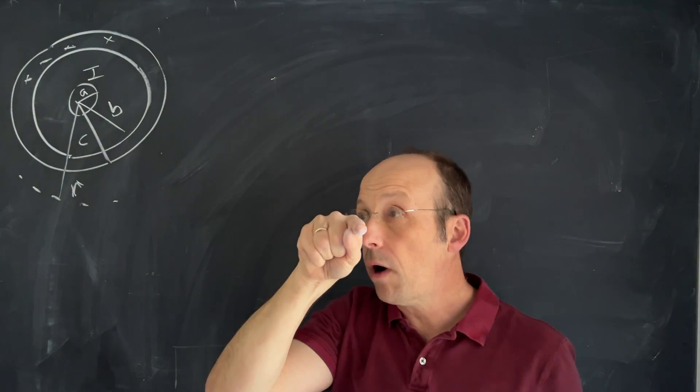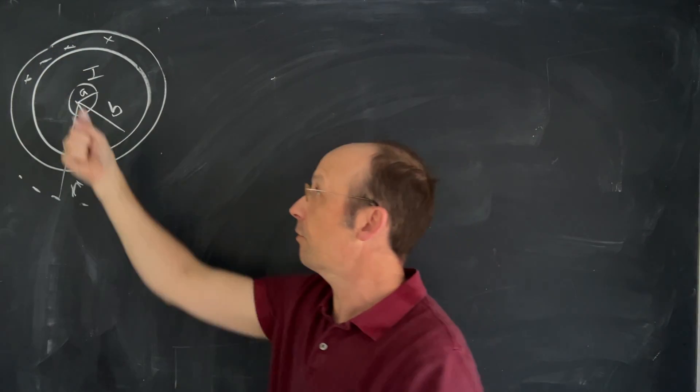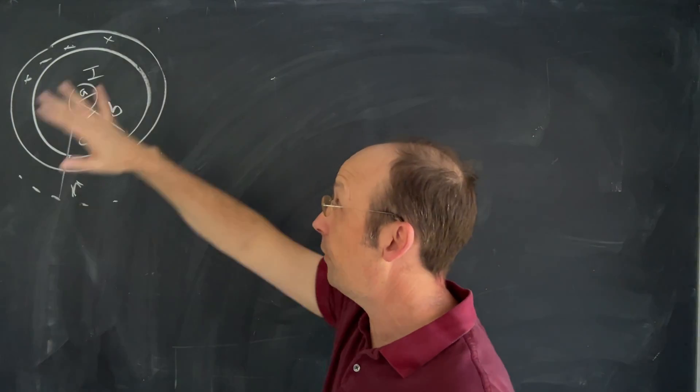Imagine that I have a cable and it's got two parts. There's a center wire and then an outer wire and they have equal and opposite current. Here you have a current coming out of the board, there you have current going into the board. Let's find the magnetic field everywhere.